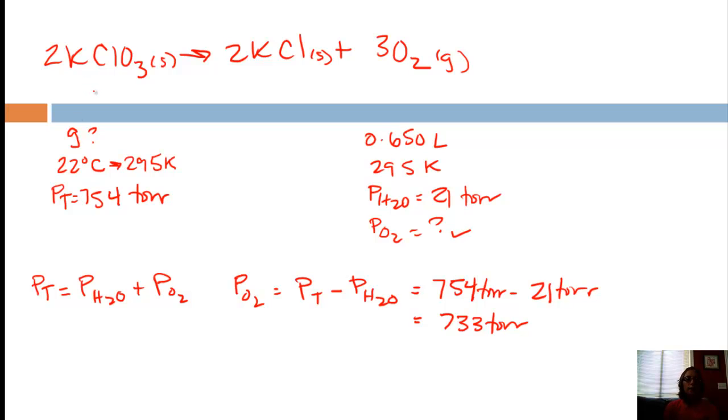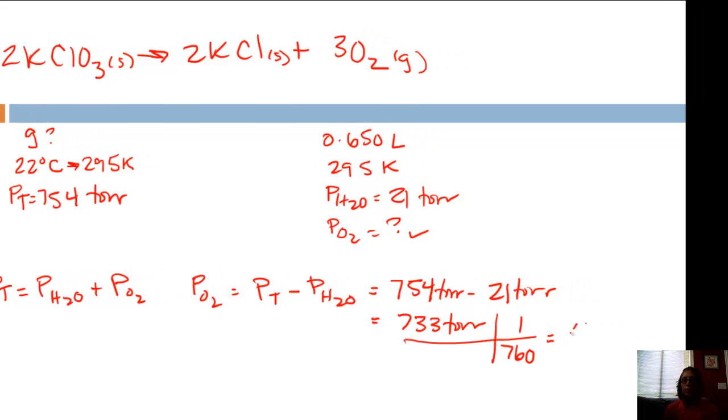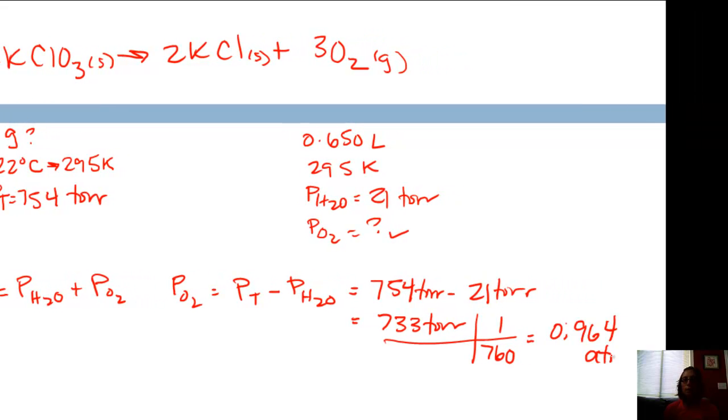Now we're looking for the grams of KClO3. Well, in order to get grams, we're going to need moles. But we don't really know anything else about KClO3. But we do know the partial pressure of O2. And it's a gas, so we can assume it behaves as an ideal gas. So we know the pressure, we know the volume, we know the temperature. We can use ideal gas law to find moles of O2, and then use mole ratio to convert to KClO3. Well, in order to use the ideal gas law, I know my pressure is going to need to be in atmospheres. So let's convert that real quick. I know for every 760 torr, there's one atmosphere. And so that should give us 0.964 atmospheres.